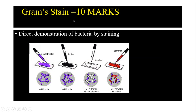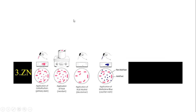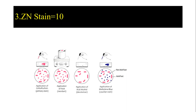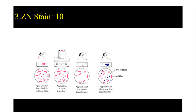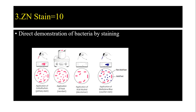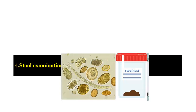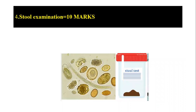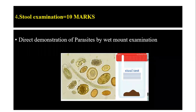The third station is Ziehl-Neelsen staining, also called ZN staining or acid-fast staining. You have to perform the staining, then write your observation and inference. This is also worth 10 marks.